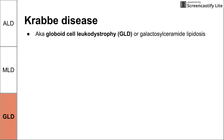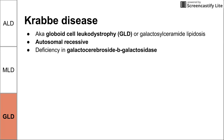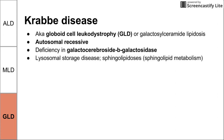Lastly, we have Krabbe's disease, also called globoid cell leukodystrophy (GLD), or galactosylceramide lipidosis. This one is also autosomal recessive — MLD and GLD are autosomal recessive, whereas ALD is X-linked. Krabbe's disease is due to a deficiency in galactocerebroside beta-galactosidase. Remembering galactocerebroside is good enough to associate the enzyme with Krabbe's disease. This is another lysosomal storage disease in the sphingolipidoses category, a problem with sphingolipid metabolism.